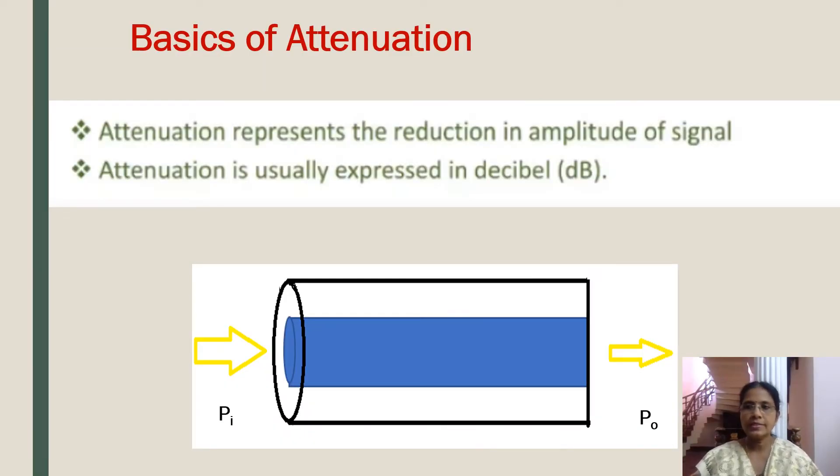Attenuation is defined as the ratio of optical output power to the input power. It represents the reduction in amplitude of signal. Attenuation is usually expressed in decibel.